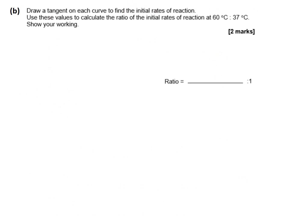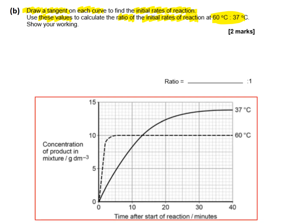Question B asks us to draw a tangent on each curve to find the initial rate of reaction. We follow what it says and draw a tangent on each curve — that allows us to find the initial rate of reaction, which is the reaction rate at the very start when the enzyme is added to the substrate at time point zero. We then use these values to find the ratio of the initial reaction rate at 60°C versus 37°C, and we need to show our working.